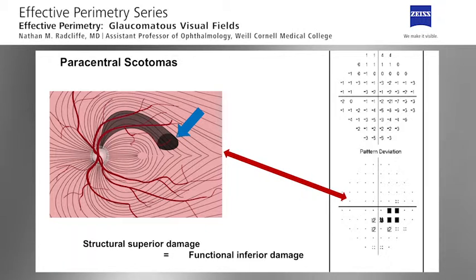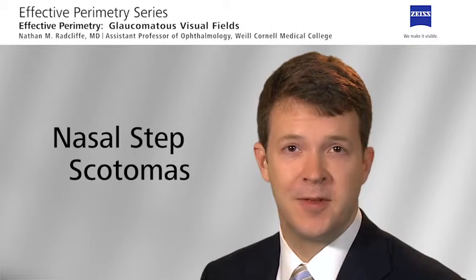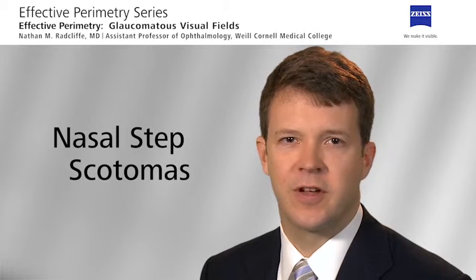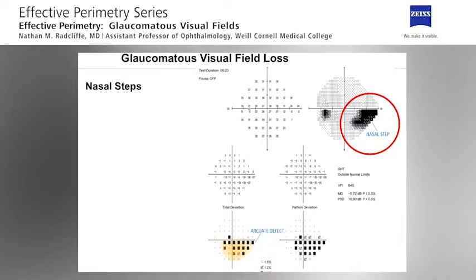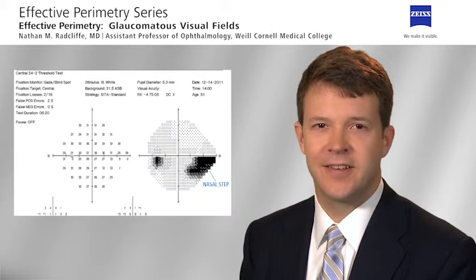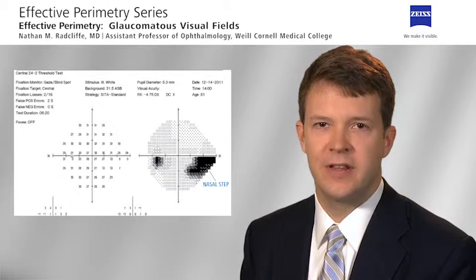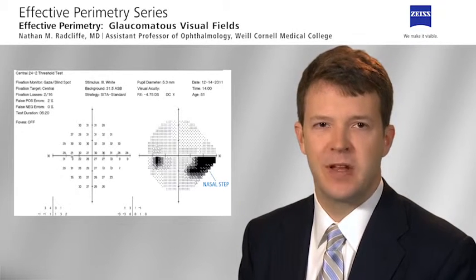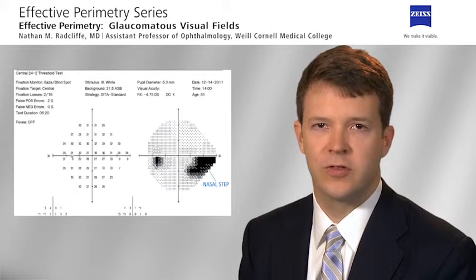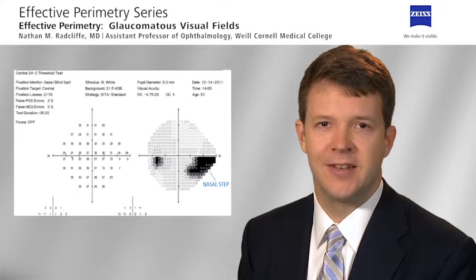Again in the visual field test results you can see the corresponding functional location. Finally, let's review nasal step scotomas. A more widespread involvement of fibers in all parts of the optic disc will seldom be entirely symmetrical but instead is likely to involve a larger percentage of lost fibers in either the inferior or the superior half of the optic disc. As a result, light sensitivity in the superior hemifield likely will not be the same as in the lower hemifield. This often manifests itself as a difference in threshold sensitivity across the nasal horizontal meridian in the visual field — a nasal step.